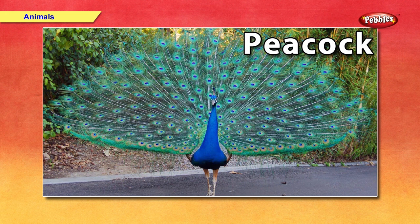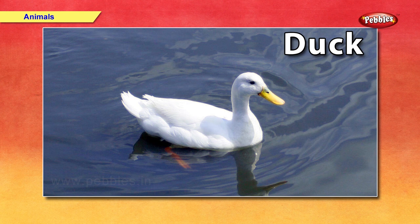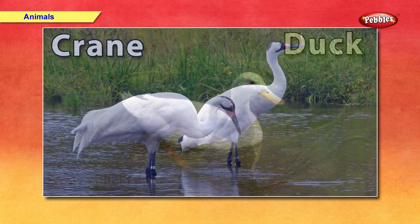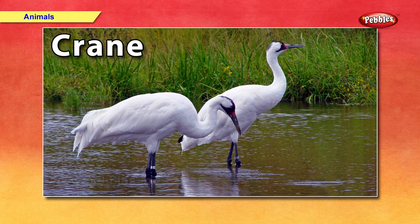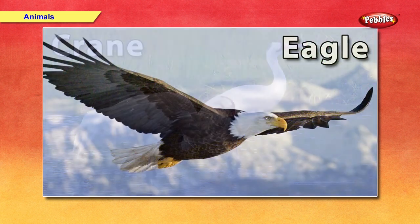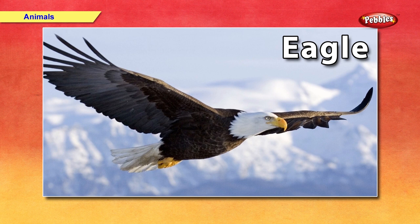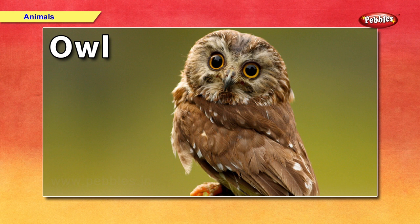Peacock — it is a very beautiful bird. The peacock is our national bird. Duck — a duck lives in lakes. It eats fish and frog. Crane — cranes live in rivers or lakes. They eat fish and frog. Eagle — an eagle can fly very high in the sky. It eats snakes and rabbits. Owl — an owl comes out of its nest only in the night. It eats mice and other small creatures.